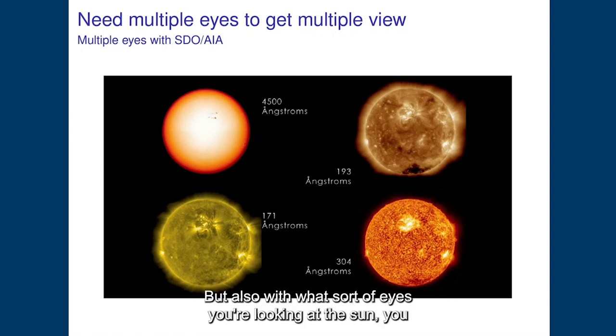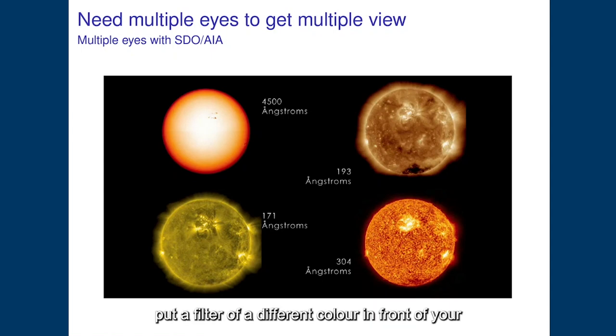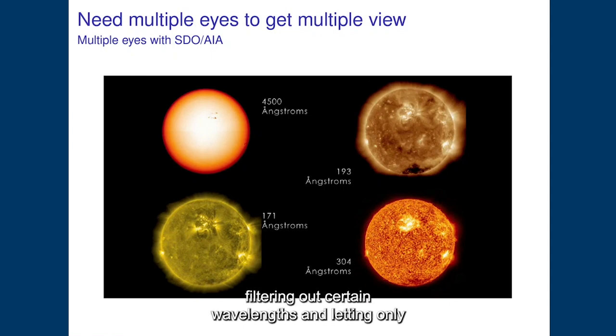You know probably already that you can, if you observe an object, put a filter of a different color in front of your instrument or in front of your eyes. So essentially, by filtering out certain wavelengths and letting only some wavelengths penetrate your detector, then you are able to select a specific view of the object that you are studying.